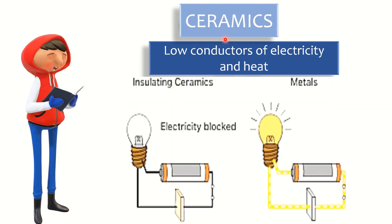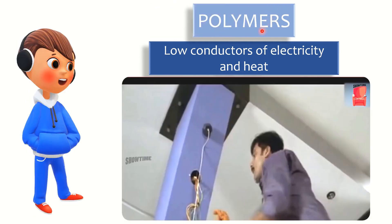Coming to ceramics — ceramics are very low conductors of electricity and heat. When a metal plate is attached to an electric circuit, the light can emit — that means electrons can pass through the metal. But when a ceramic plate is attached in between a circuit, electrons will not pass, so electricity will not pass and light will not emit. So ceramics are insulating materials rather than conductors. Similarly, polymers are also good insulating materials — not conductors of electricity or heat.